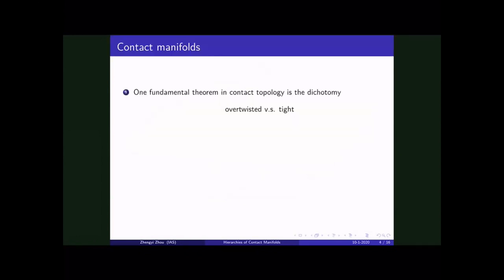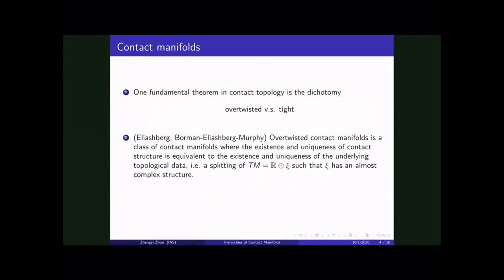And the fundamental theorem in contact topology is the following dichotomy, which is the overtwisted versus tight. And this phenomenon was first discovered by Eliashberg in 1989 for dimension three and by Borman, Eliashberg, Murphy for all higher dimensions a few years ago. And the overtwisted contact manifold is a class of contact manifolds where the existence and uniqueness are completely equivalent to the existence and uniqueness of the underlying topological data, which is the splitting of the tangent space into a trivial bundle and another even dimensional bundle with almost complex structure. This is also kind of equivalent to say that the structure group of the manifold can be reduced from SO(2n+1) to U(n). And this is purely topological. And the tight is something, some contact manifold, which is not overtwisted.